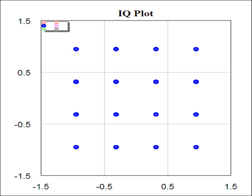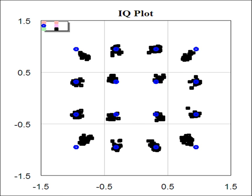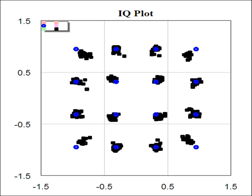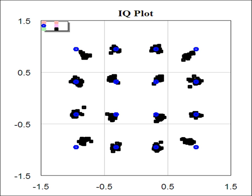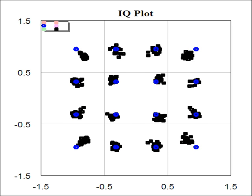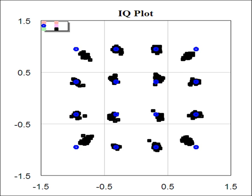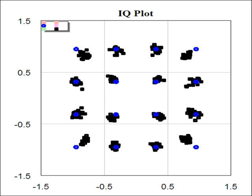Taking the 16 QAM signal and passing it through an amplifier and driving the amplifier near compression results in the IQ plot also being compressed. And the black points here clearly indicate the distortion due to the AM to AM characteristics of the power amplifier.